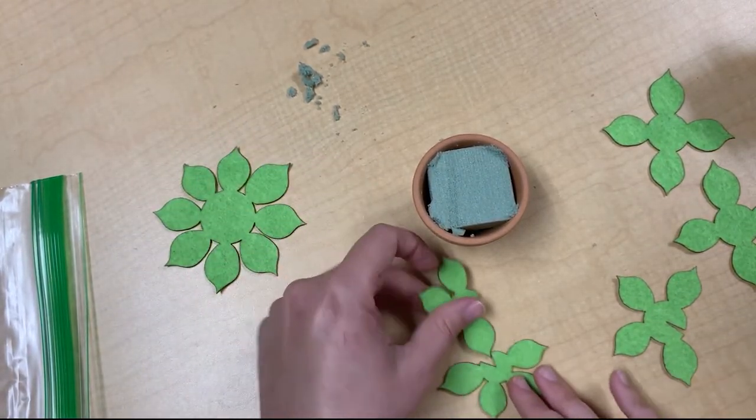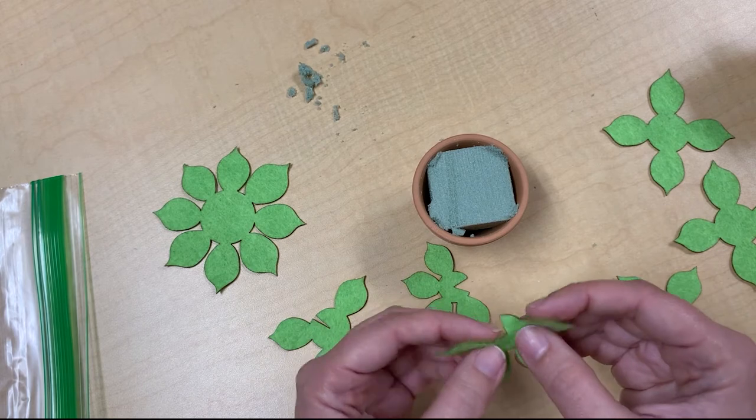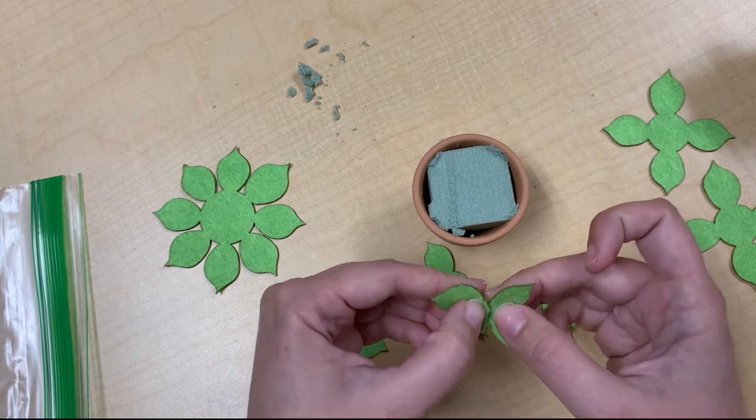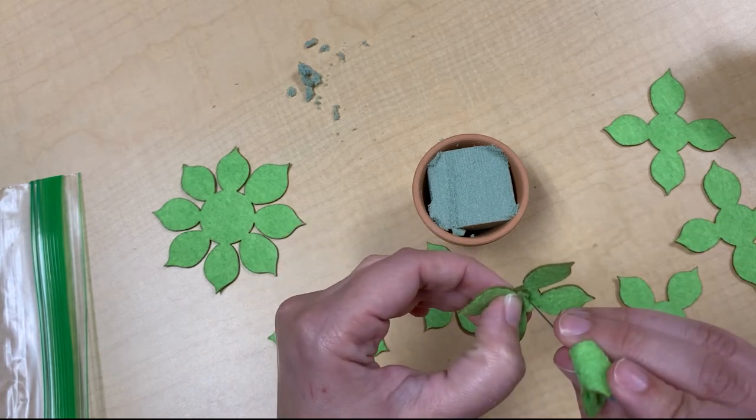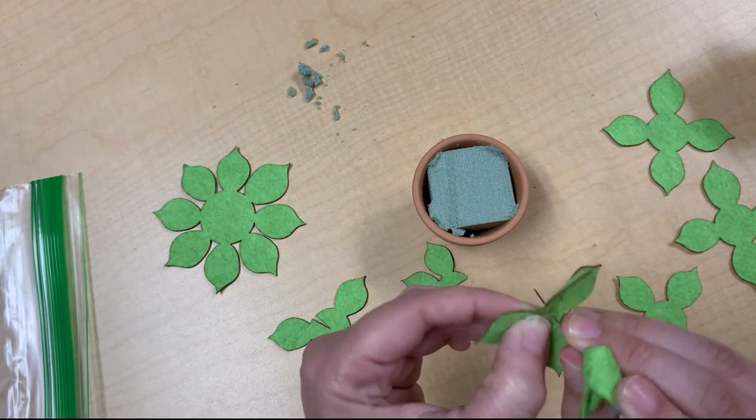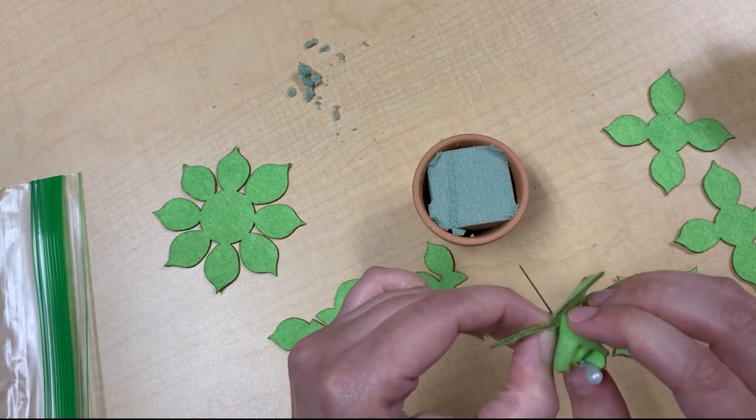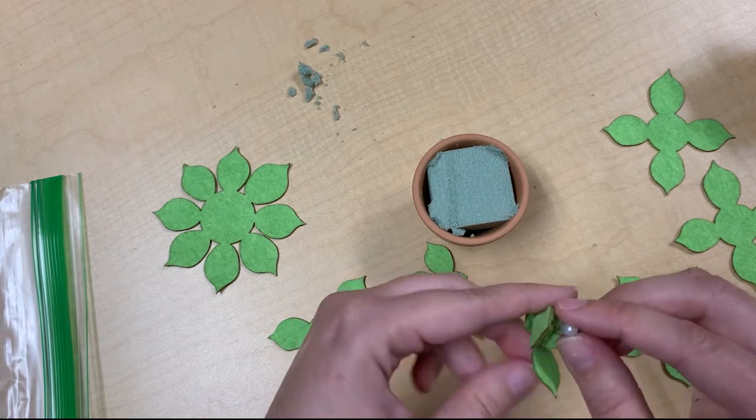Okay, next you want to find the next smallest one. You're going to overlap them like this so it kind of makes a little cone, and then stick it through. Hold it in place.